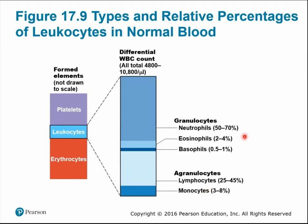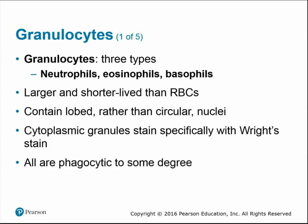Neutrophils are the most prevalent white blood cells at 50–70% of all leukocytes, about twice the size of a red blood cell. They have a multi-lobed nucleus and granules containing hydrolytic enzymes and antimicrobial proteins called defensins. Granulocytes include three types — neutrophils, eosinophils, and basophils (all the '-phils') — and all are phagocytic to some degree. Neutrophils are referred to as the bacteria slayers; their defensin granules contain enzymes that pierce holes in the cell membrane of microbes.